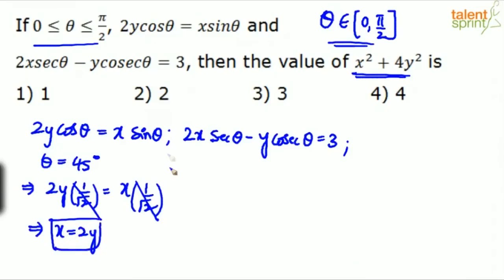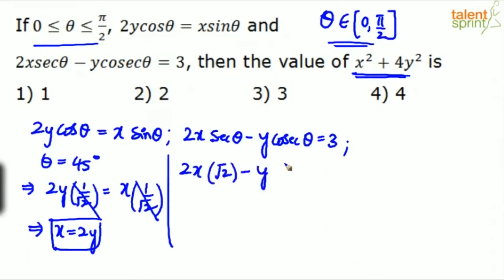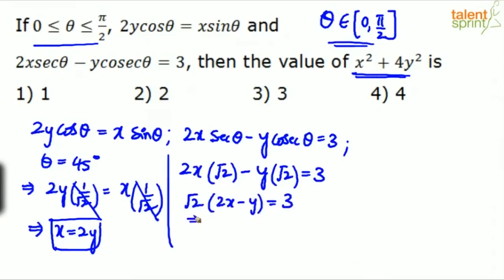Now the second equation with θ = 45°: 2x × sec45° − y × cosec45°. Since cos 45° = 1/√2, sec 45° = √2, and cosec 45° = √2 as well. So we have 2x√2 − y√2 = 3. Taking √2 common gives 2x − y = 3/√2.